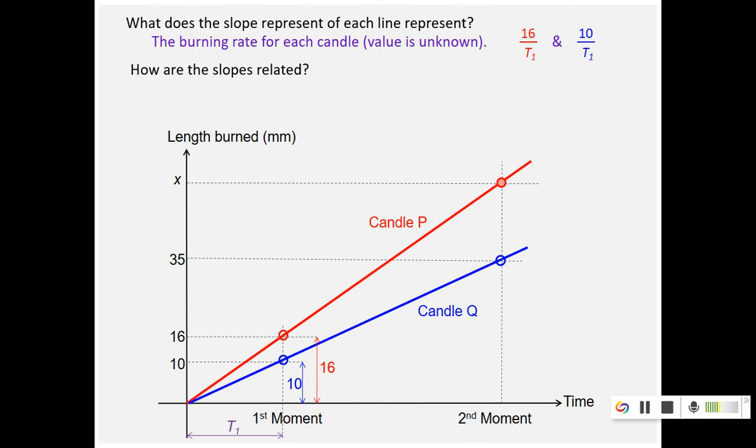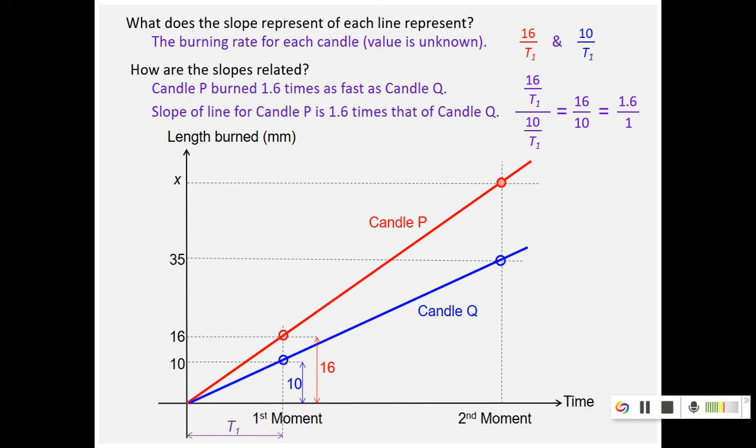But however, we can relate the two slopes. If we take the burning slope of candle P divided by the burning rate of candle Q, you will get this complicated looking fraction, which you can simplify to 1.6 over 1. So what it really means is candle P is burning 1.6 times as fast as candle Q. So 1.6 is also relating the burning rates. That means the slope of the line P is 1.6 times the slope of the line Q. That's how you can also interpret the meaning of 1.6. So slope of MP is equals to 1.6 MQ.